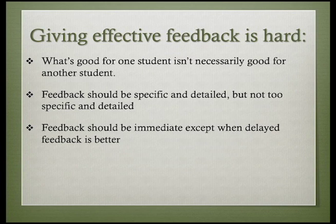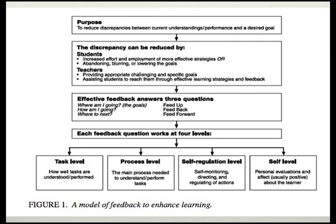We know some of the things that cause problems with feedback. If feedback is too vague, it's unhelpful. If it's excessively critical or controlling, it can be damaging. How do we do feedback well? Frustratingly, even that is a little murky. What's good for one student isn't necessarily good for another. Feedback should be specific and detailed, but not too specific and detailed. Feedback should be immediate, except when delayed feedback is better. One of my favorite writings on feedback is an article by Hattie and Timperly, and this model from that article can help us give more effective feedback.